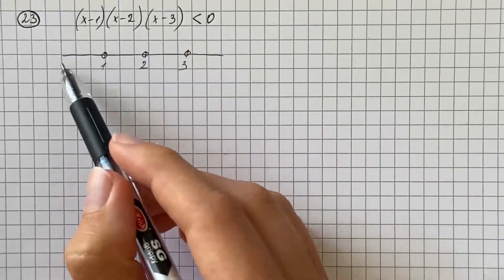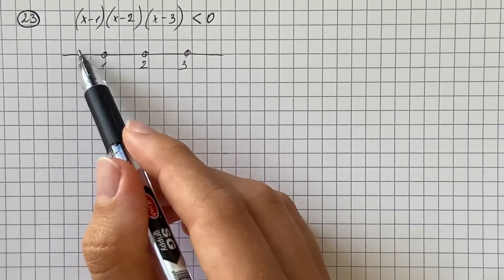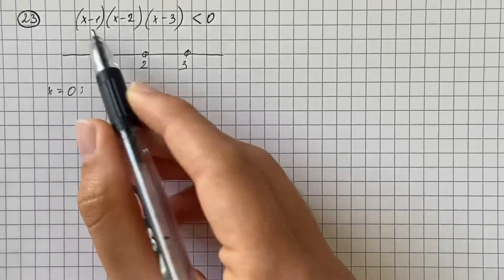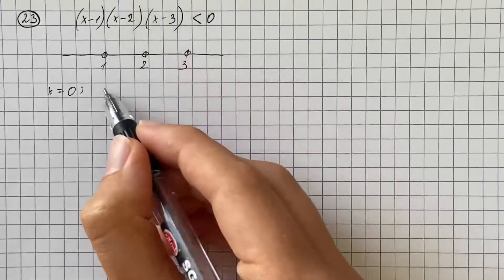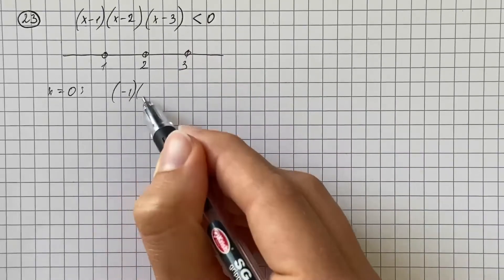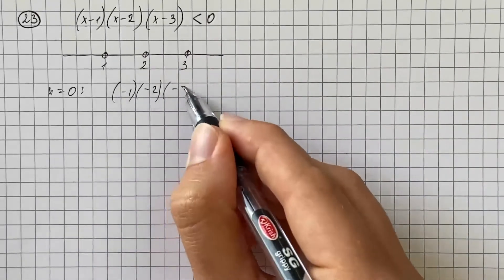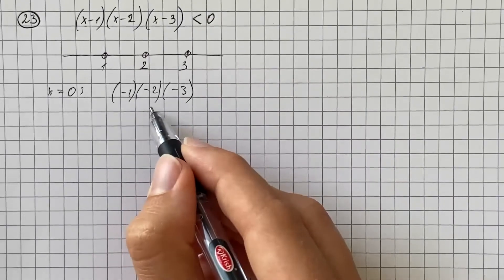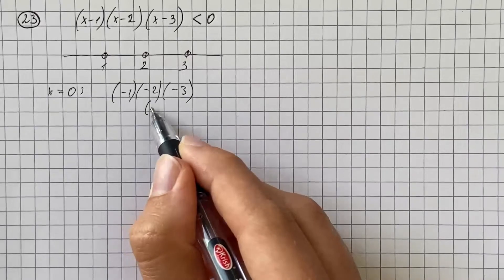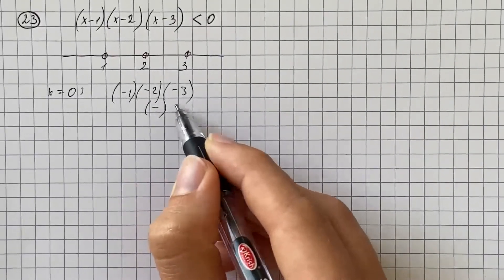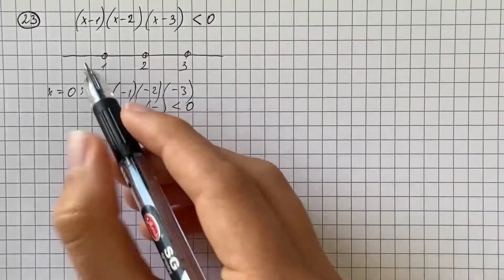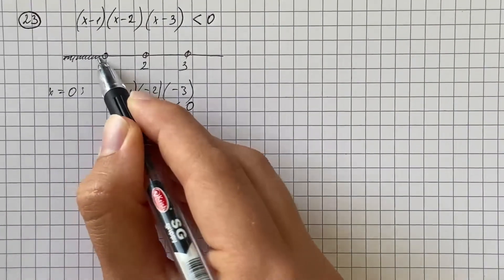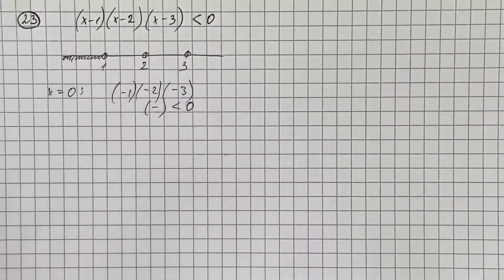Now we check numbers from each interval, starting with x equals 0. Substituting into our inequality gives negative 1 times negative 2 times negative 3: negative times negative gives positive, and positive times negative gives a negative number, which is less than 0. So all values less than 1 will satisfy our inequality.